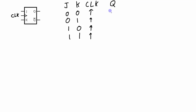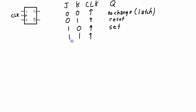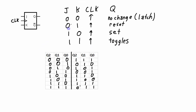Given the J and the K value at the rising edge of the clock, what is going to happen to Q? If J is 0 and K is 0, nothing is going to happen — there will be no change to Q. We can consider this the latch state. When J is 0 and K is 1 on the rising edge of the clock, Q will reset — in other words, it will become 0. When J is 1 and K is 0, Q is set — it becomes a 1. And when J is 1 and K is 1 on the rising edge of the clock, Q toggles: if it was a 1 it becomes a 0, and if it was a 0 it becomes a 1.